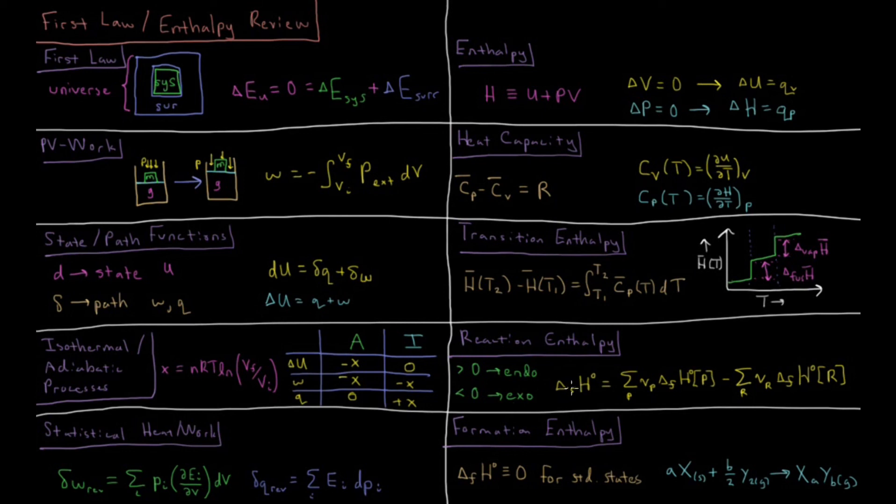The enthalpy and the standard enthalpy for a reaction is equal to the sum over all of the products of their stoichiometric coefficient times their standard enthalpy of formation for the given product. Those are all positive values. Then you subtract from all the reactants their stoichiometric coefficient times their standard enthalpy of formation for the given reactant.